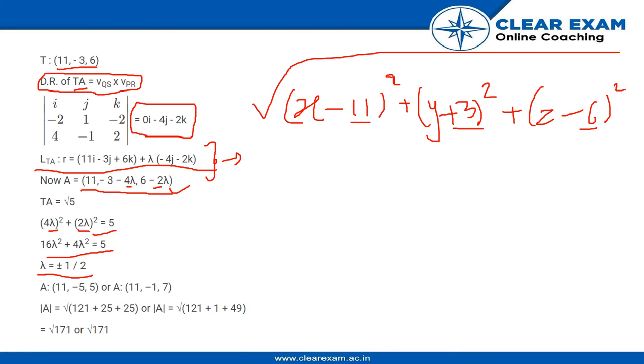And after putting the lambda in A, we get the points A as 11 minus 5 and 5 and 11 minus 1 and 7. After getting these points,